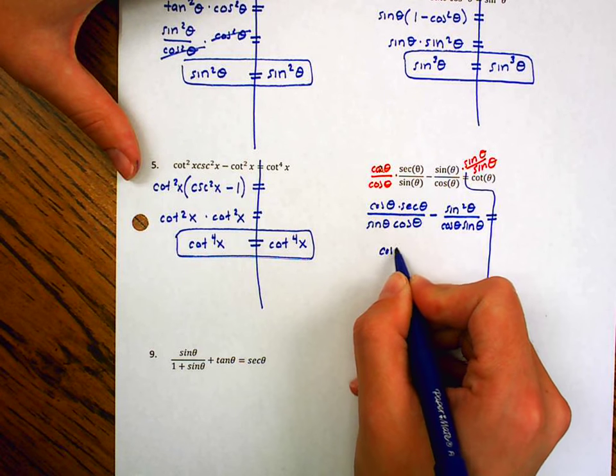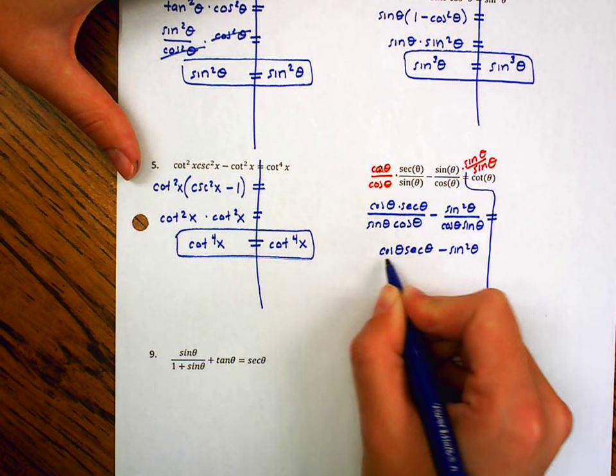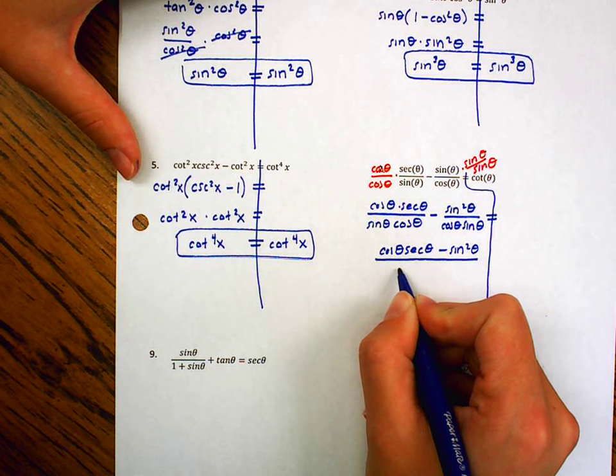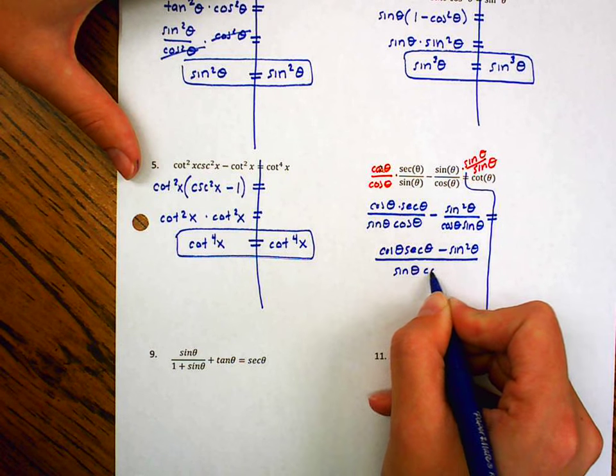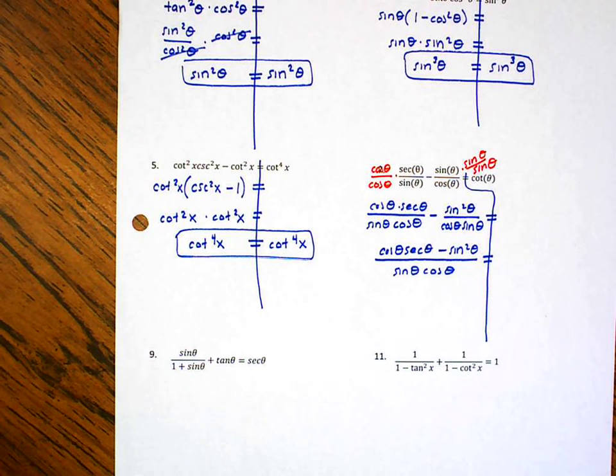So now I'm going to combine. I've got a cosine theta, secant theta, minus sine squared theta, all over sine theta, cosine theta.